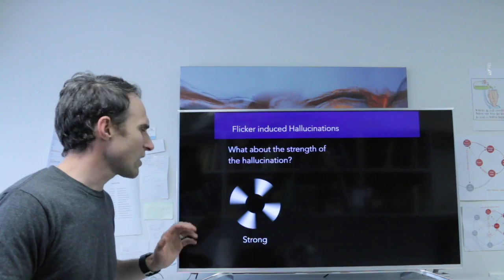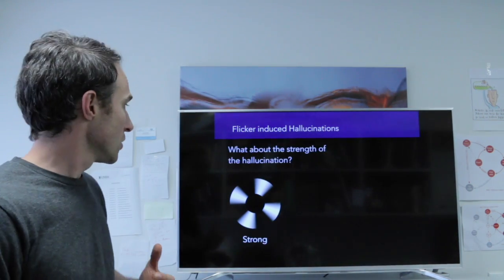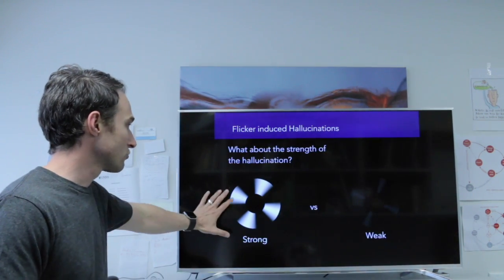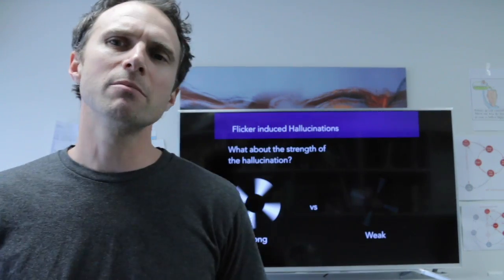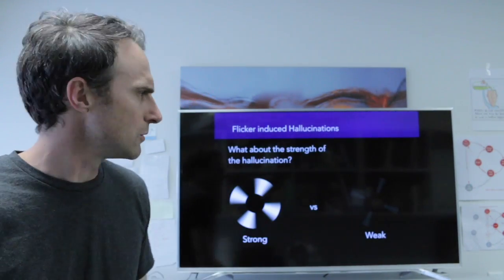So let me just very quickly tell you how we measure the strength. So what do I mean by strong? Well, something like strong where you can clearly see something versus weak where you have a lot of trouble seeing it. That's what I mean by the strength of the hallucination.